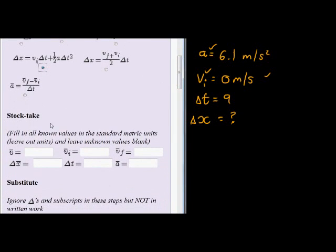So we know the formula. Now we can do the stock taking part. This is the average acceleration. We don't know the average acceleration. We know the initial velocity. Now very important, let's just read our question. Fill in all the values in standard metric units, leave out the units and leave unknown values blank. So we don't know this one. We're going to leave it blank. The initial velocity, we do know, is 0 meters per second.